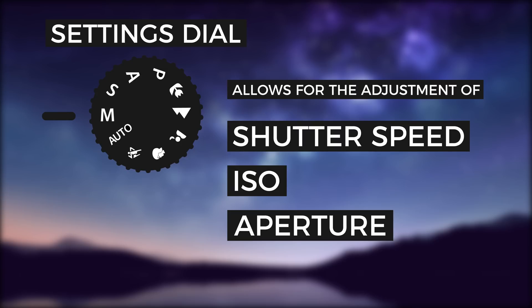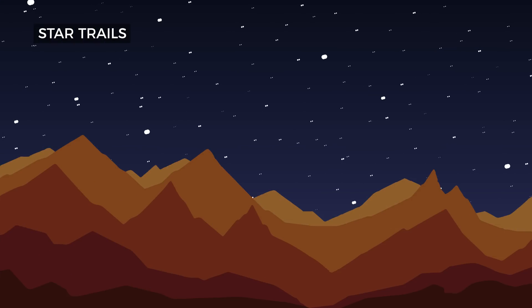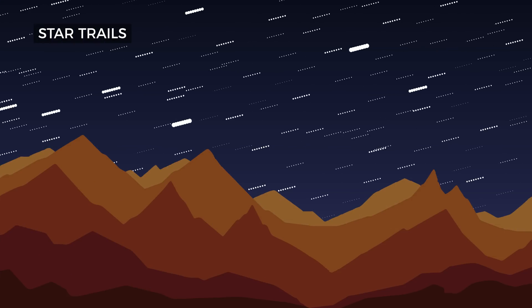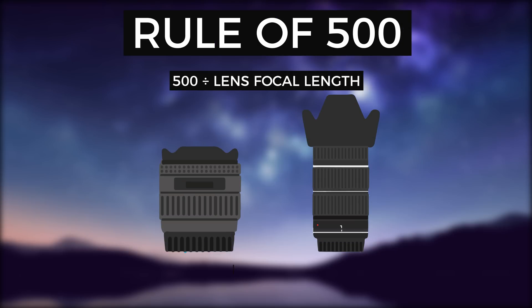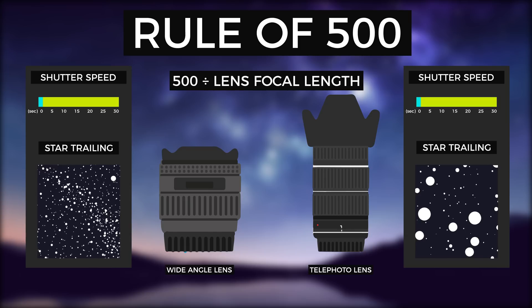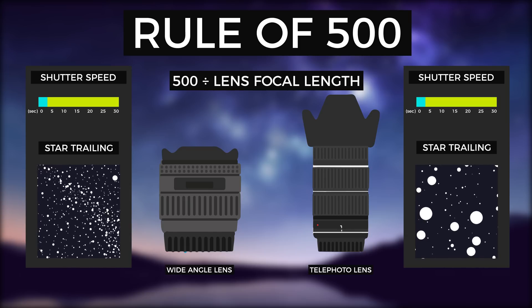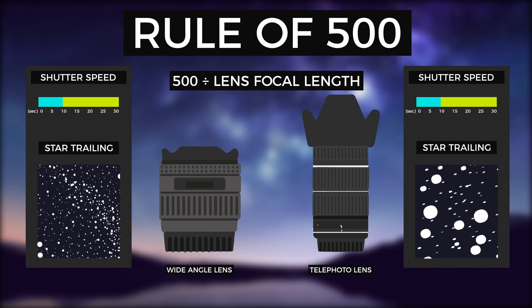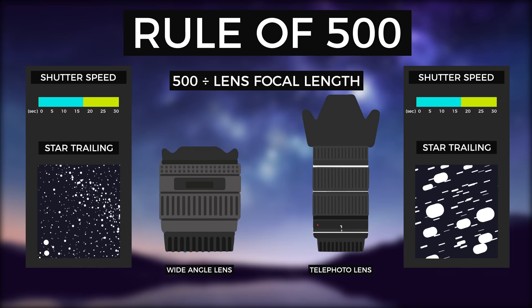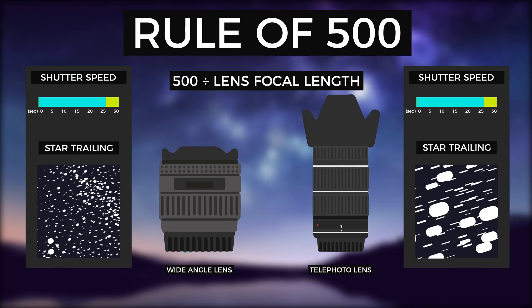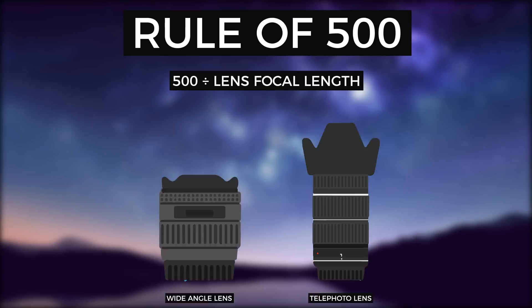When taking pictures of any night sky scene, it's important to avoid star trails, which can occur if the shutter speed is too long. Taking 500 divided by the focal length of your lens will give you your maximum shutter speed. This is the shutter speed you will want to use to get as much light into the camera, and you won't encounter any star trailing.